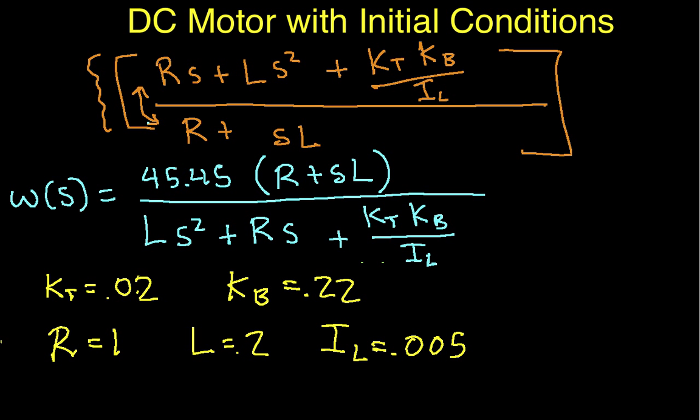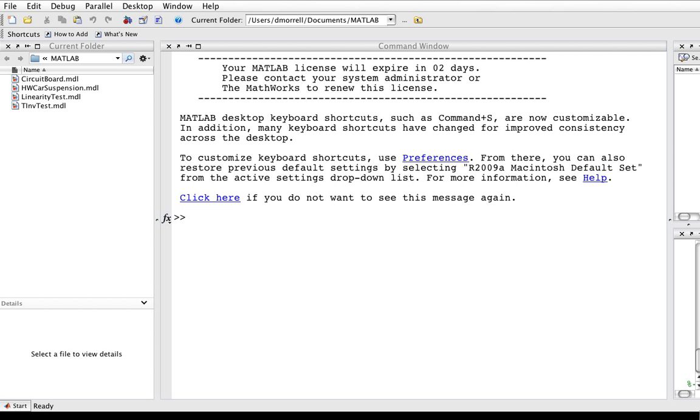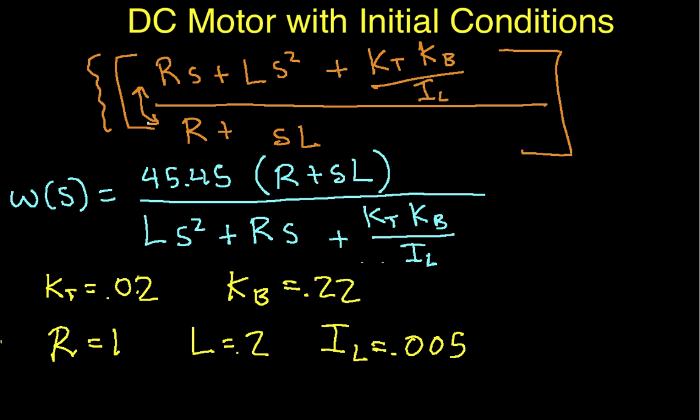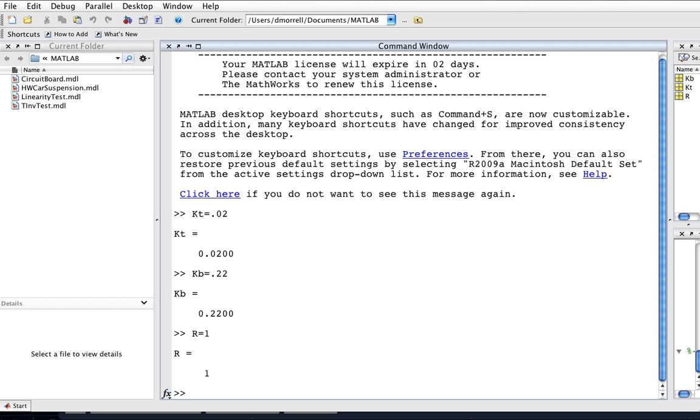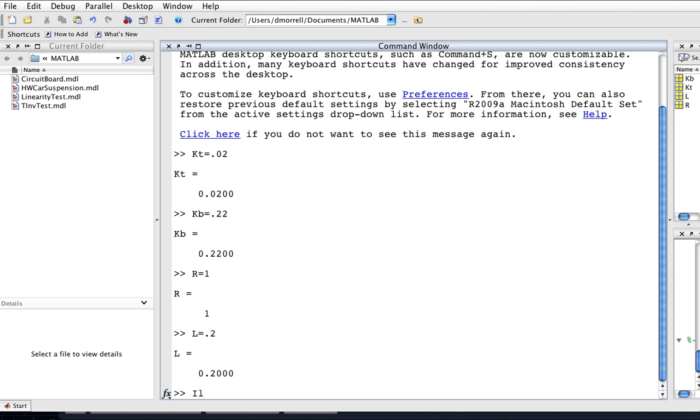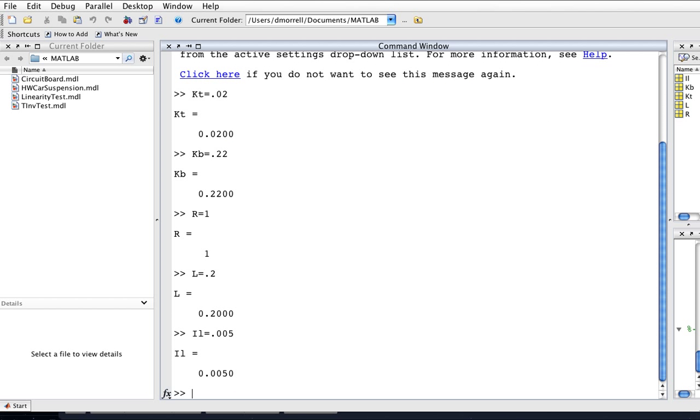Okay, so the next thing that we'll do is we'll bring up MATLAB. And again, we're going to use MATLAB as a calculator to compute these things. So, in order to be able to do that, I'm going to slide that out of the way. So, now it's visible to me. Okay, so we have KT is equal to 0.02. We have KB is equal to 0.22, R is equal to 1, L is equal to 0.2, and IL is equal to 0.005.